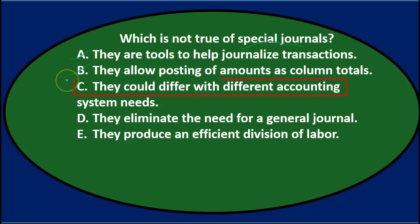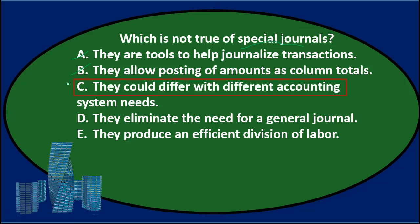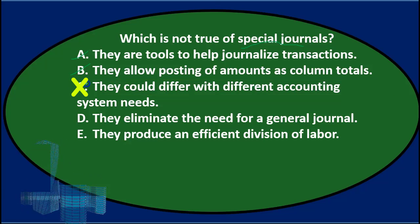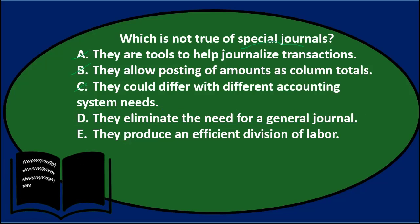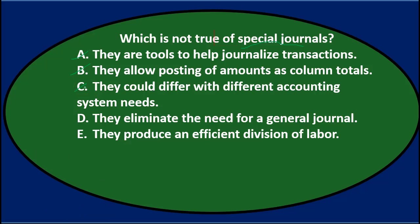C. They could differ with different accounting systems. The types of special journals and their format may differ depending on different companies, so I think that's true. D. They eliminate the need for a general journal. They do reduce the general journal activity, but at the end of the time period and for any transaction that doesn't fit into a special journal, we will still use the general journal. So I think that's wrong. E. They produce an efficient division of labor — let's keep that for now.